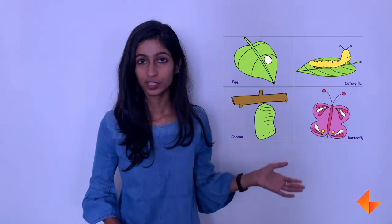Now I am going to show you the actions for each of these stages. First comes the egg, second is the caterpillar, third is the cocoon, and the fourth stage is the butterfly.